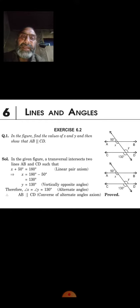These are alternate angles. When alternate angles are equal, therefore the lines are parallel. AB parallel CD by the converse theorem.